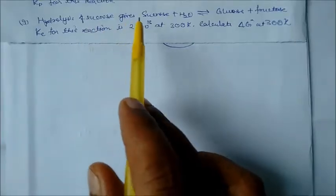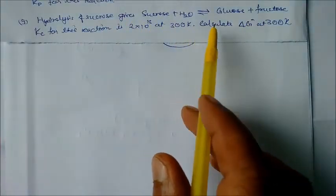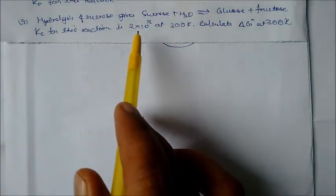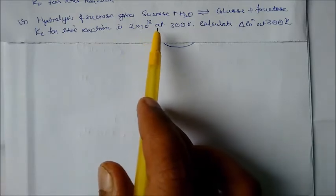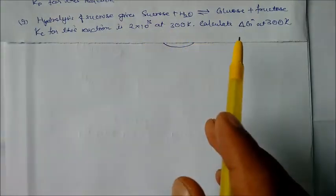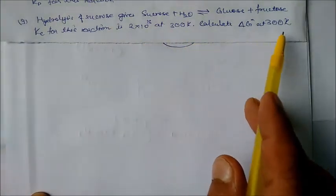Final problem: sucrose + water ⇌ glucose + fructose (the reverse hydrolysis reaction). Kc = 2 × 10²⁰ at 300 K. Calculate ΔG° at 300 K.